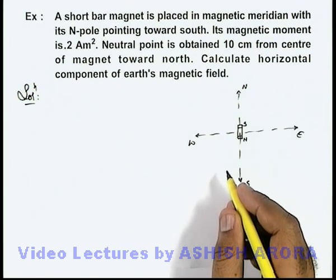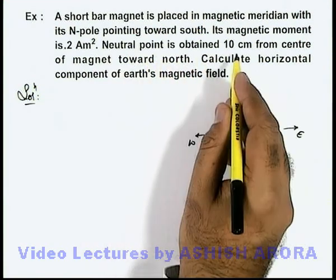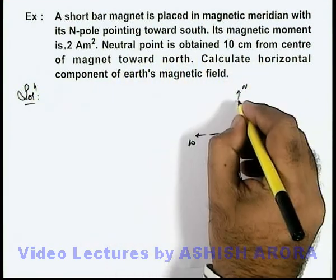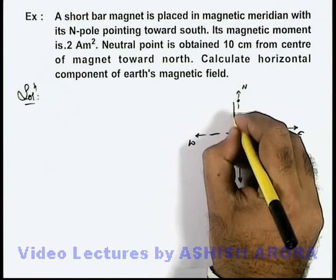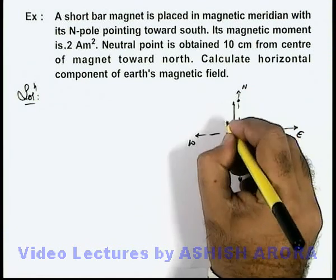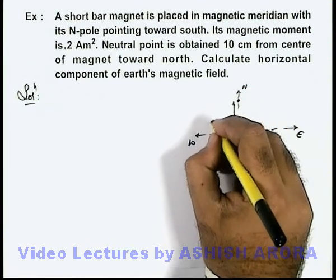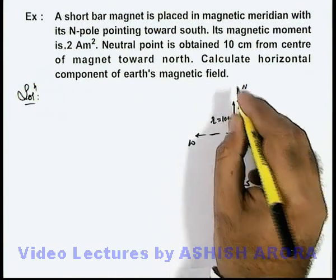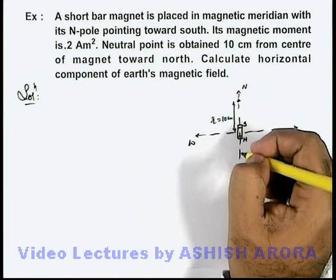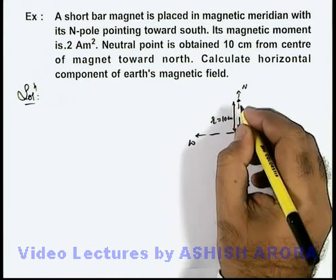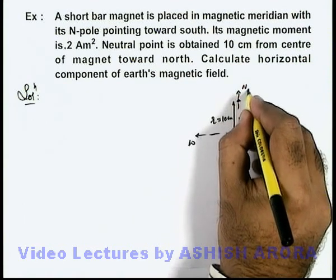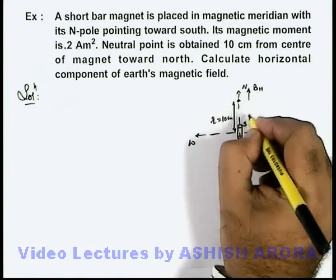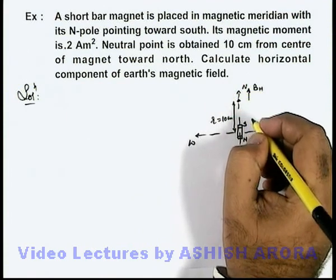A neutral point is obtained 10 centimeter from the center of the magnet towards north. That means this is a point located at a distance of r equal to 10 centimeter where the horizontal magnetic field is zero. At this point and every point, the horizontal component of Earth's magnetic field points in the northward direction.